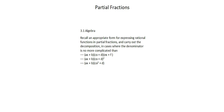An important note is that the method of partial fractions applies only to proper fractions. A proper fraction is one in which the degree of the denominator is greater than that of the numerator. If you're dealing with an improper fraction, you can use polynomial division. The remainder of your result will be a proper fraction, and you can then apply the method of partial fractions to that remainder.